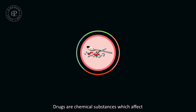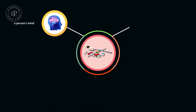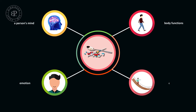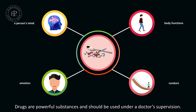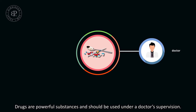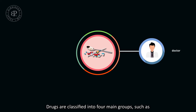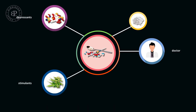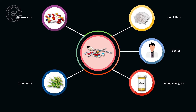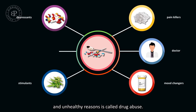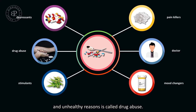Drugs are chemical substances which affect a person's mind, body functions, emotion, and conduct. Drugs are powerful substances and should be used under a doctor's supervision. Drugs are classified into four main groups, such as depressants, stimulants, painkillers, and mood changes. Drugs can be misused by people, and using drugs for non-medical and unhealthy reasons is called drug abuse.